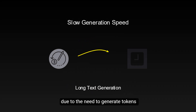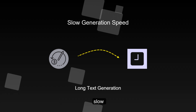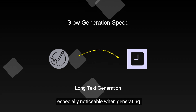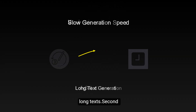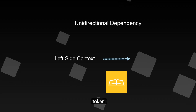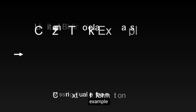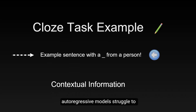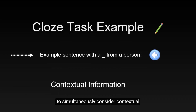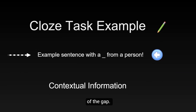First, due to the need to generate tokens one by one, the generation speed is relatively slow, especially noticeable when generating long texts. Second, autoregressive models can only use the generated left-side context to predict the next token. This one-way dependency makes it difficult to fully capture bidirectional semantic relationships in text — for example, in cloze tasks, autoregressive models struggle to simultaneously consider contextual information from both sides of the gap.